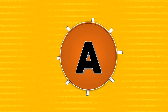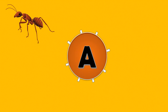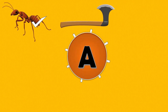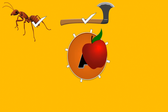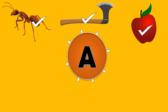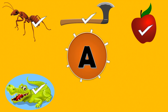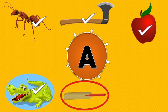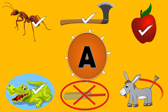A. A for ant, correct? A for axe, correct? A for apple, correct? A for alligator, correct? A for bat — no, it's wrong. A for donkey — no, it's wrong.